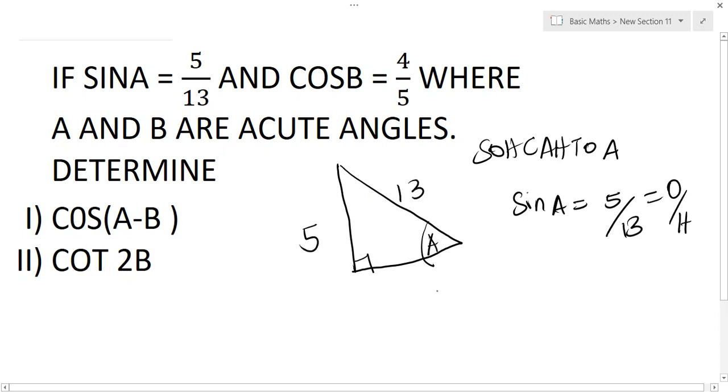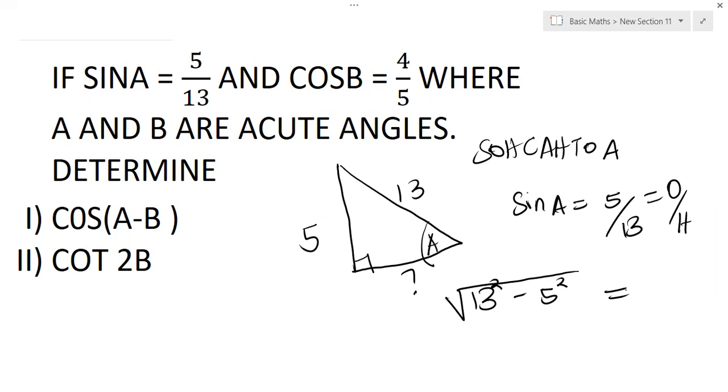And using the Pythagorean theorem we can get the value of the adjacent side. So we'll have 13 squared minus 5 squared square root to give us the adjacent side. So that's going to be 169 minus 25, which is 144, and the square root of 144 will be 12. Now that's it for A.